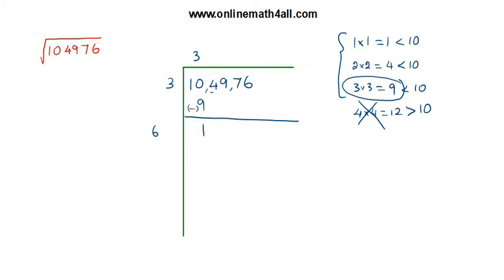What we need to do next is bring down the next pair of numbers. Please remember, you should not bring just one number — always we have to bring down a pair. So the next pair is forty-nine. You bring this forty-nine down, and it becomes one hundred and forty-nine.